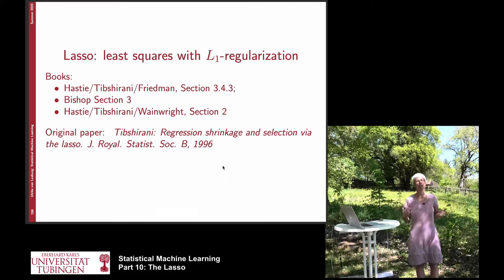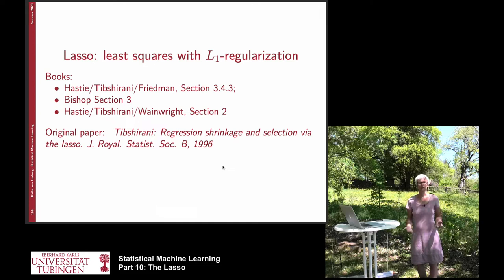The next algorithm we want to consider is called the LASSO algorithm. It's again an algorithm for least squares regression, but it uses a different regularizer than in ridge regression. In ridge regression we use the L2 norm as regularization. We are now going to see that we use the L1 norm, and this corresponding algorithm is going to be called LASSO.